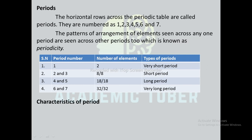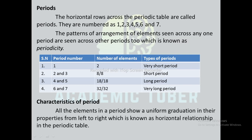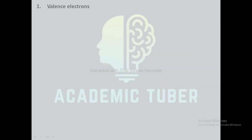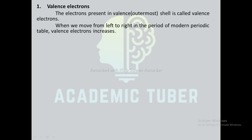Now we are going to discuss some of the characteristics of periods. All the elements in a period show a uniform graduation in their properties from left to right, which is known as the horizontal relationship in the periodic table. First characteristic is valence electron: the electron present in the valence shell of an atom is known as a valence electron. When we move from left to right in a period of the modern periodic table, valence electrons increase.